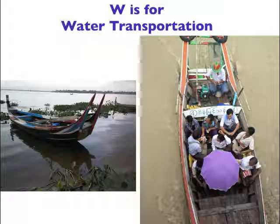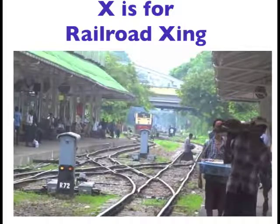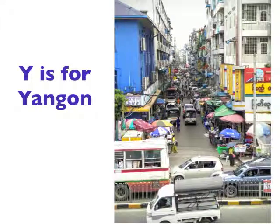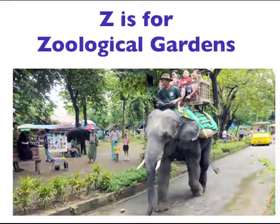W is for Water Transportation. X is for World Crossing. Y is for Yangon, Myanmar's largest city. Z is for Zoological Garden.